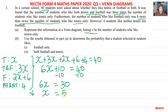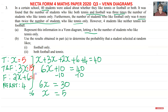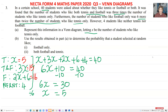With x = 5: tennis only = 5, both tennis and football = 3 × 5 = 15, and football only = 2 × 5 + 6 = 16. Let's verify: 5 + 15 = 20, and 16 + 4 = 20, so 20 + 20 = 40. That checks out.